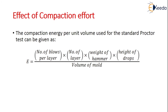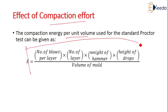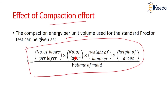Coming to the effect of compaction effort: compaction effort is the compaction energy per unit volume used in the standard Proctor test. It is given by the formula: E equals the number of blows per layer, multiplied by the number of layers, multiplied by the weight of the hammer used for compaction, multiplied by the height of drop, divided by the volume of the mould on which the compaction effort is applied.